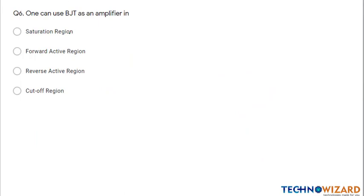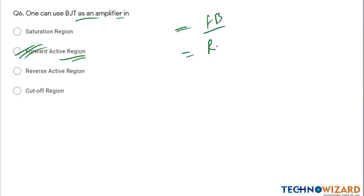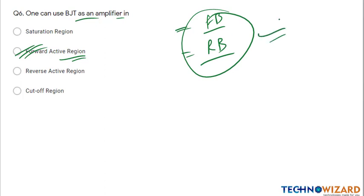Question number six: one can use a BJT as an amplifier only in the forward active region. In this region, the input junction will be forward biased and the output junction will be reverse biased — only then will it act as an amplifier.